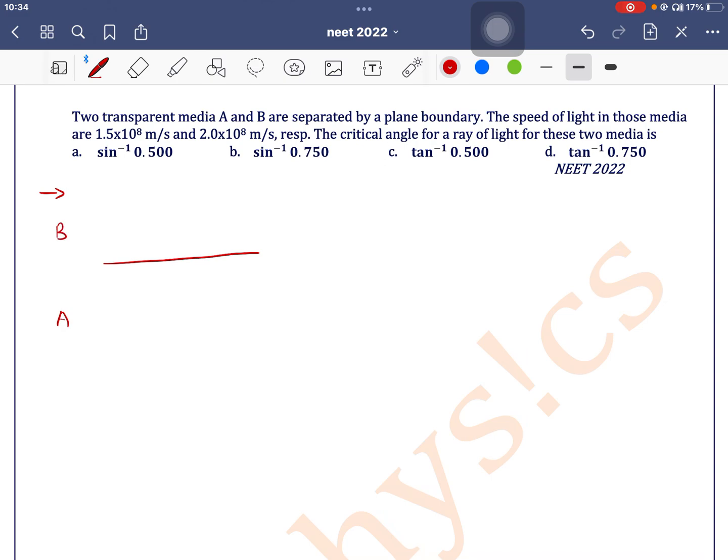B. Here, let's say the refractive index is μ₁, here refractive index is μ₂. Here velocity of light is 1.5×10⁸, here velocity of light is 2×10⁸ meters per second.